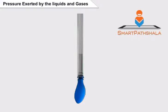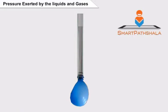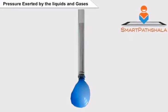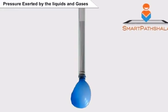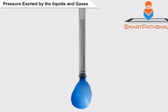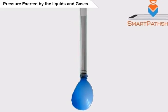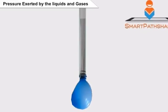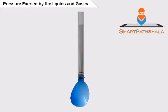Now pour some more water in the plastic pipe. We can observe that the rubber balloon bulges further and becomes more wide. By this experiment, we can understand that the pressure exerted by water at the bottom of the container depends on the height of its column.